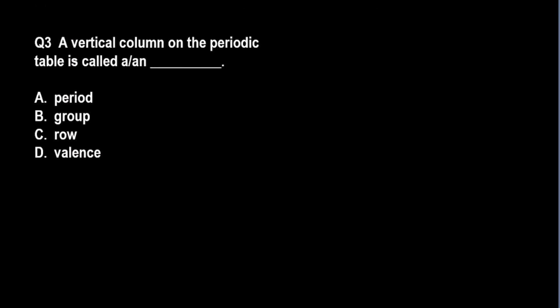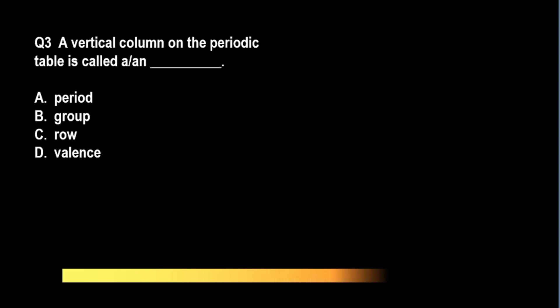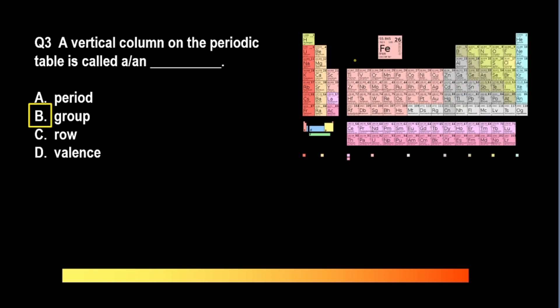A vertical column on the periodic table is called: A. A period, B. Group, C. Row, D. Valence. The correct answer is B. This is just a review to help us study the trends in the periodic table. In the periodic table, you call the columns groups, and you call the rows periods.